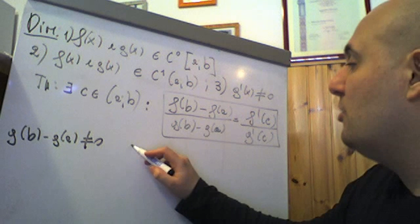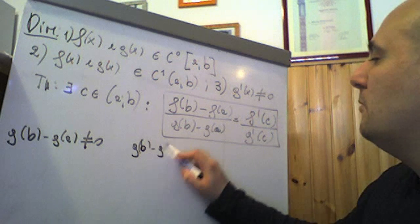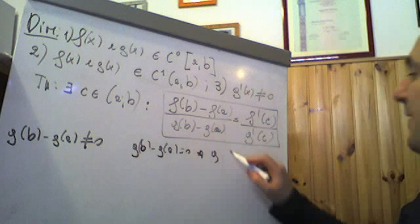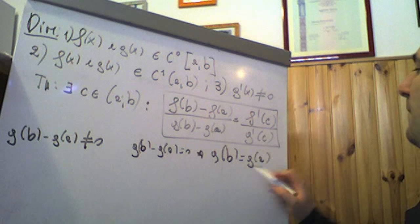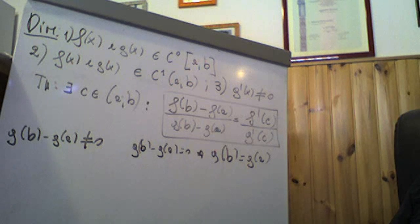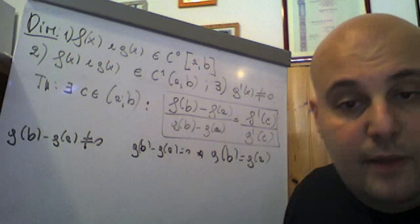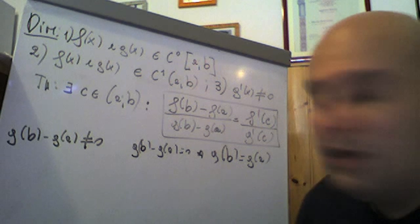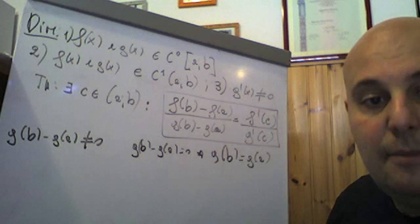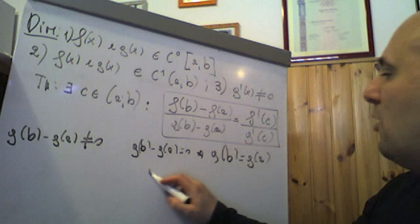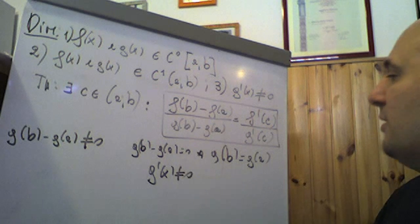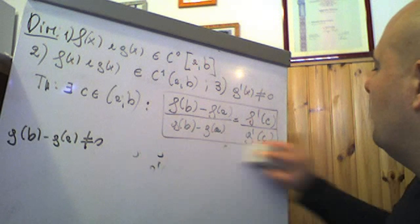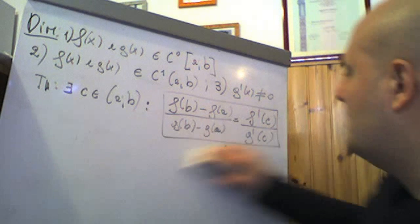Se fosse g(b) − g(a) = 0, trasportando g(a), avremmo g(b) = g(a). Questa condizione, insieme alle altre, va a comprendere le ipotesi del teorema di Rolle. Allora esisterebbe almeno un punto c appartenente a (a,b) in cui g'(c) = 0. Ma questo va contro l'ipotesi secondo la quale g'(x) è diverso da 0. Quindi per forza abbiamo che g(b) − g(a) è certamente diverso da 0, e questo andava dimostrato preventivamente.